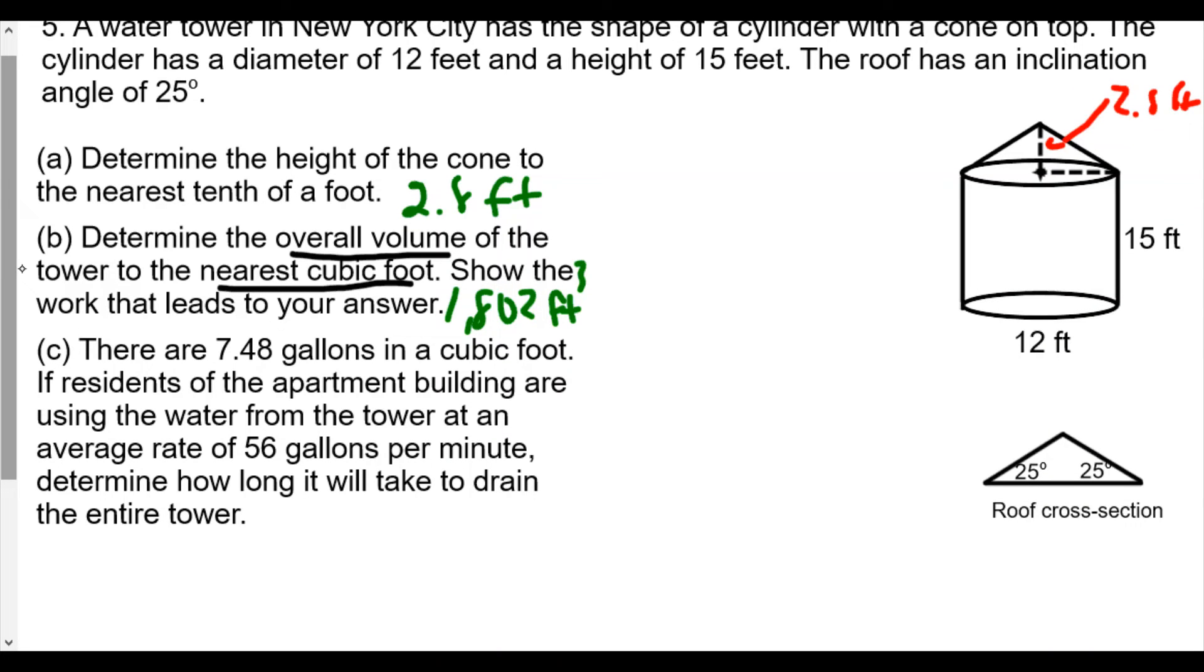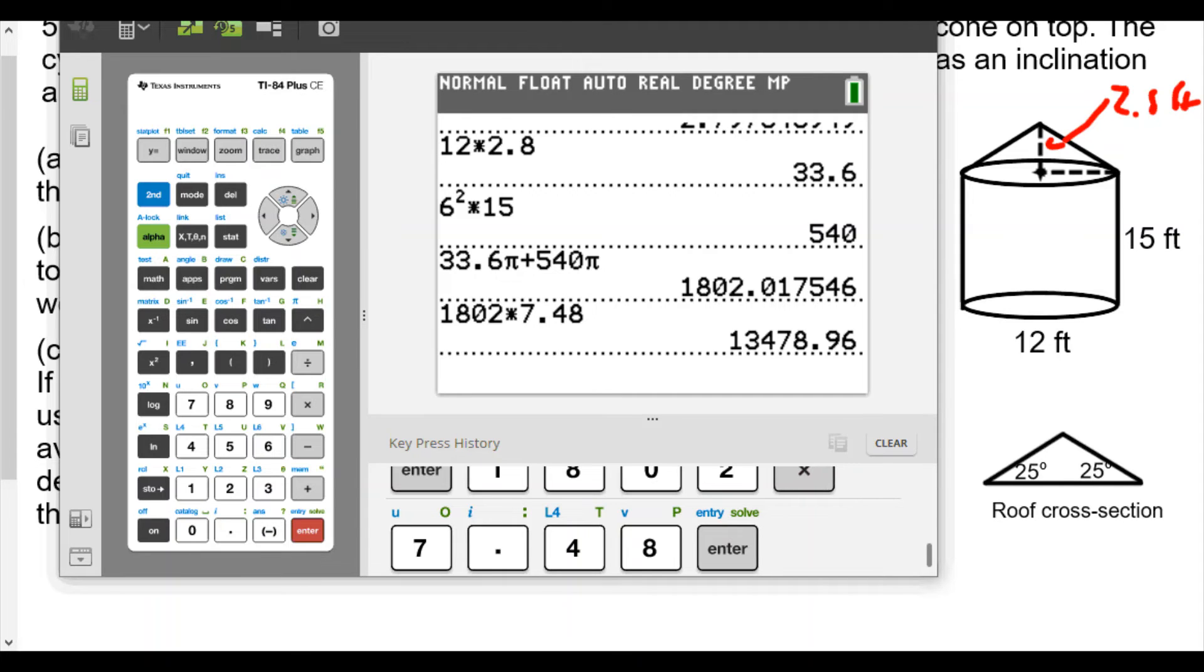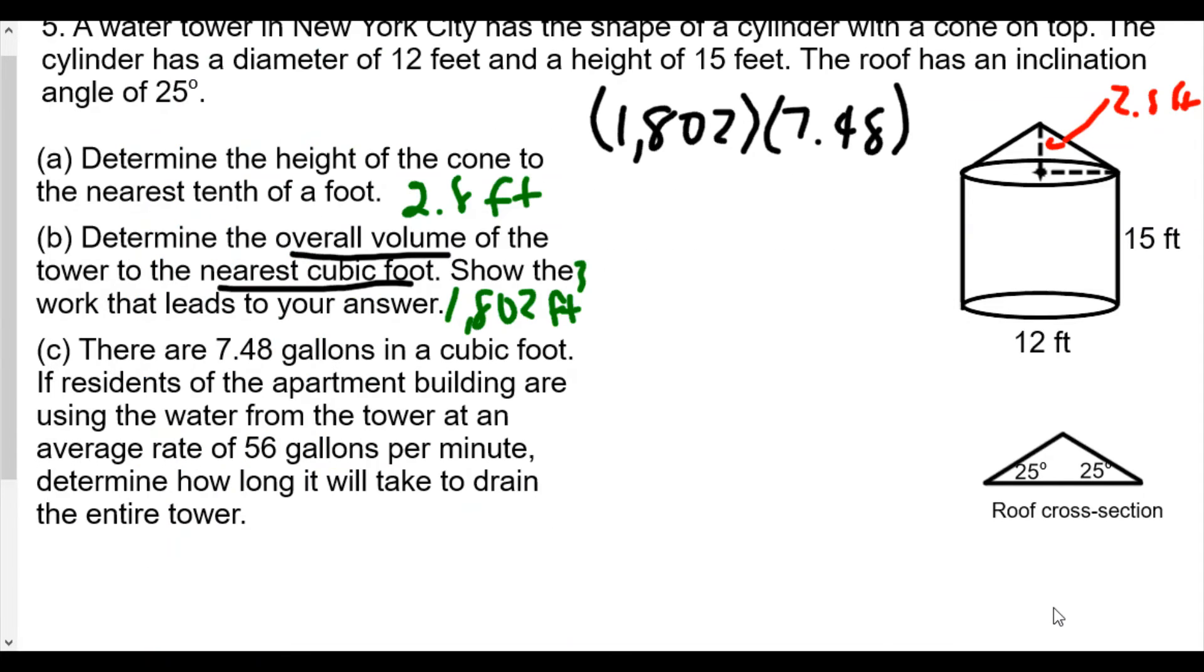Here we go. We're going to take our cubic feet—we have 1802, that's our total amount in the water tower—and then we're going to multiply that by 7.48 gallons. So we do 1802 times 7.48, and we're going to get 13,478.96 gallons.